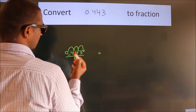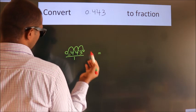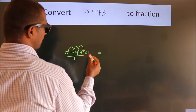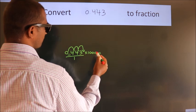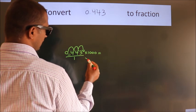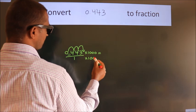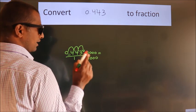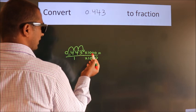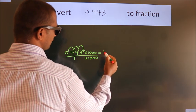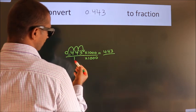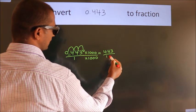To move this decimal after three numbers, we have to multiply it with thousand. Whatever you are multiplying in the numerator, in the denominator also do the same. So, 0.443 into thousand equals 443, and 1 into thousand equals thousand.